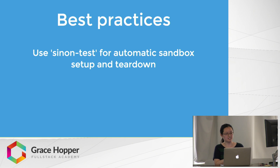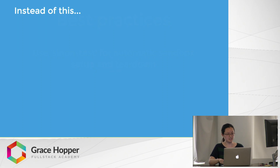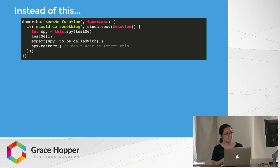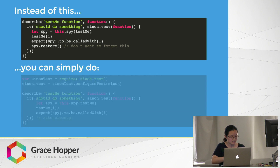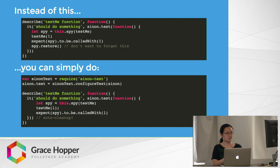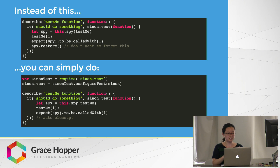For best practices with Sinon: instead of always calling .restore() on your spy, stub, or mock, you can use the sinon-test module. Simply require sinon-test and wrap the callback function within the 'it' block with sinon.test(), so you don't need to call restore manually.